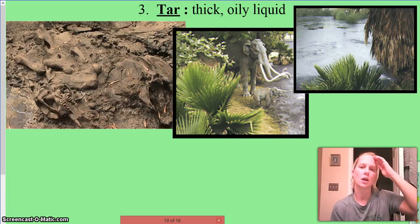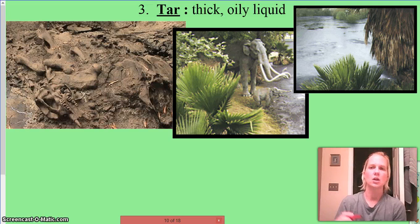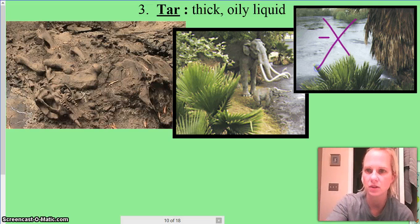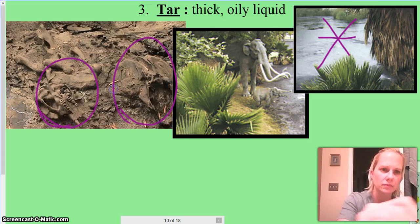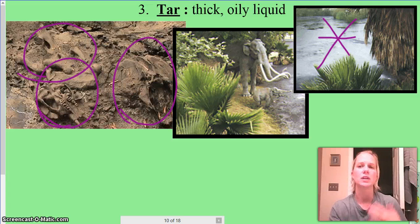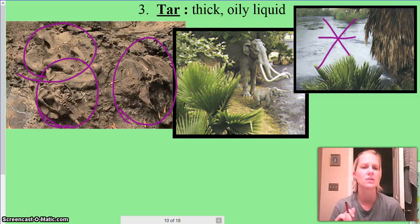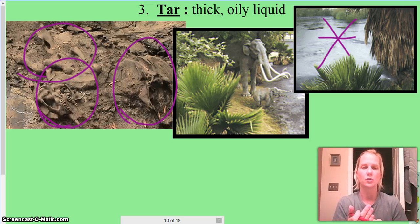The third way is tar — tar is very thick and oily. These are the La Brea tar pits in California. You can see organisms that have actually been taken out of the tar pits when they have been excavated. You're going to find saber-toothed tigers and woolly mammoths. It's not as good as ice, but it's still going to preserve some features of the organism.